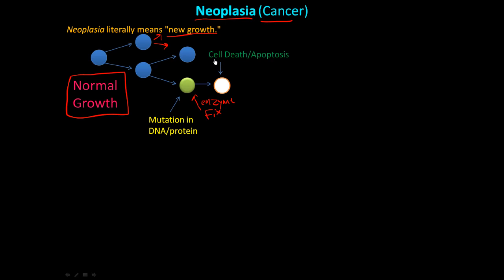If these repair mechanisms fail, the cell will say, 'Something is wrong with me, I'm just going to go ahead and die.' This is called apoptosis. And that's kind of normal growth.